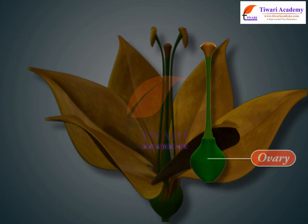Ovules arise from the placenta. Single ovule examples: wheat, paddy. Many ovules examples: papaya, watermelon, etc.